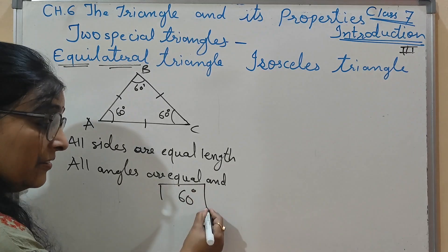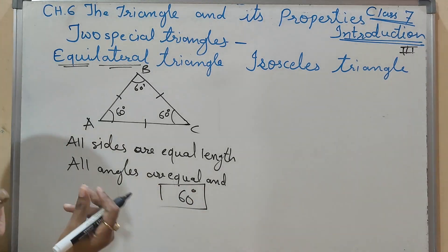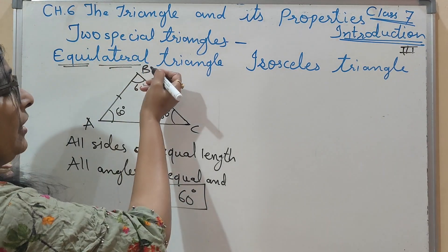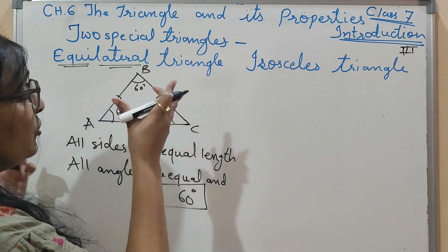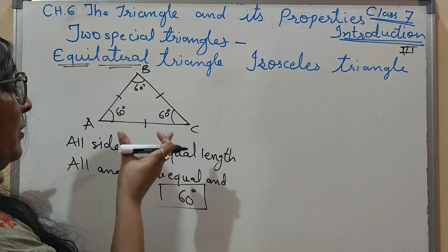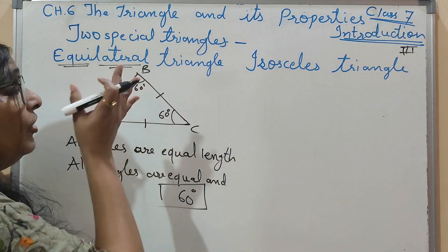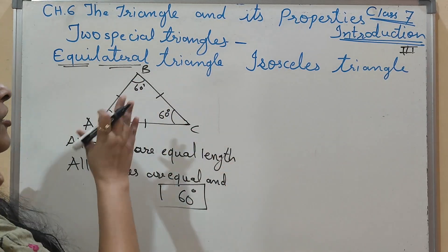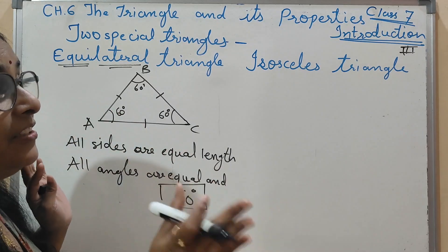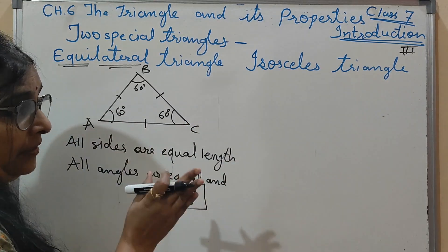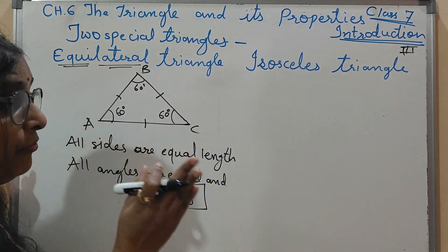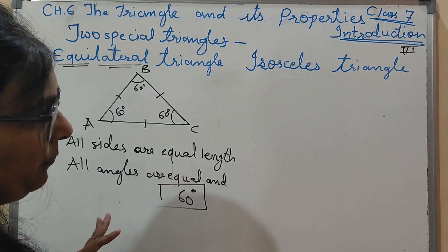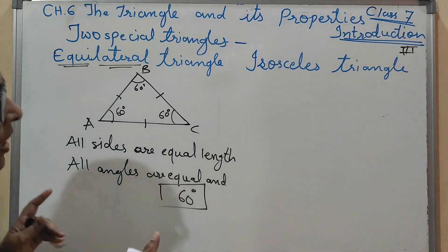All angles are equal and of 60 degrees — kitne ka hote hain? 60 degree measure ke hote hain. So equilateral is a special triangle. Two properties hamein mili hain: all sides are equal, and sabhi angles equal hote hain aur 60 degrees ke hote hain.